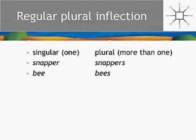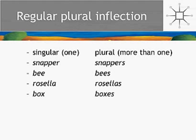There's one bee, and when there's a swarm of them, they are bees. In Australia, rosellas are a kind of parrot — one rosella, a whole bunch of rosellas. One box, two boxes.